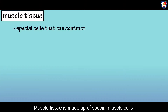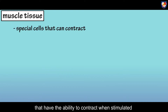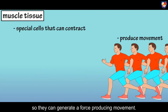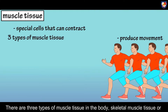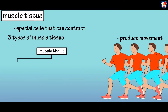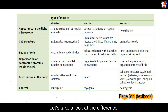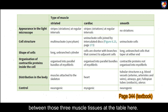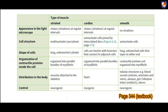Muscle tissue is made up of specialized muscle cells that have the ability to contract when stimulated, so they can generate a force producing movement. There are three types of muscle tissue in the body: skeletal muscle tissue, also known as striated muscle tissue; cardiac muscle tissue; and smooth muscle. Let's take a look at the difference between those three muscle tissues in the table — you can find it on your textbook page 344.